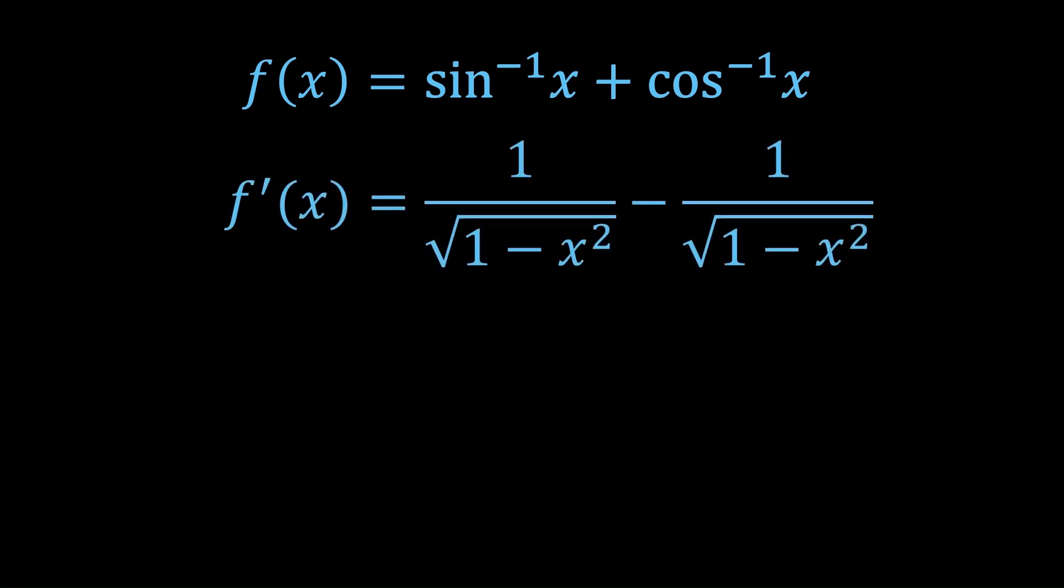So when you differentiate this function, you just get 0. That means the function is never changing, especially since it's continuous and its derivative is 0. The only possibility is this function has to be a constant function, a horizontal line.